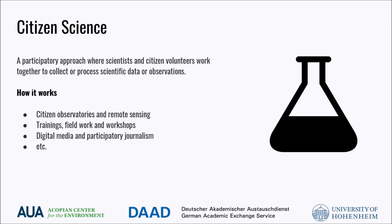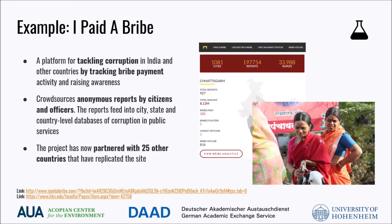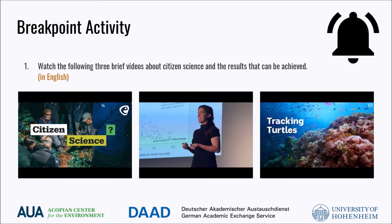Citizen engagement is also possible through digital media, including social media. The advancement of computing power and emerging technologies enables quick analysis of massive amounts of data collected online. One example is the platform I Paid a Bribe, which attempts to tackle corruption in India and other countries by tracking bribe payment activities and raising awareness about the nature and spread of bribe-related exchanges. The platform crowdsourced reports feed into city, state, and country-level databases of corruption in public services. The Indian website receives around 25 to 50 reports per day, with many stories leading to suspension of officials involved. The project has now partnered with 25 other countries that have replicated the site.